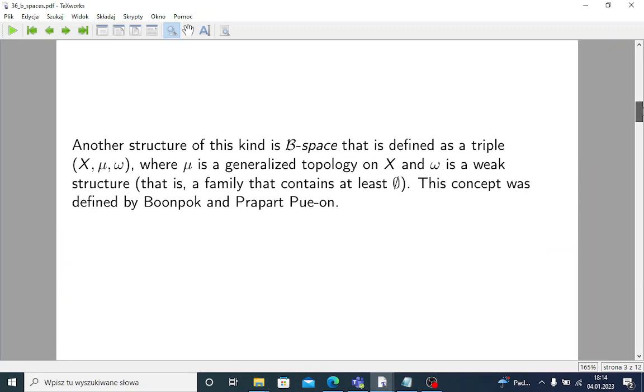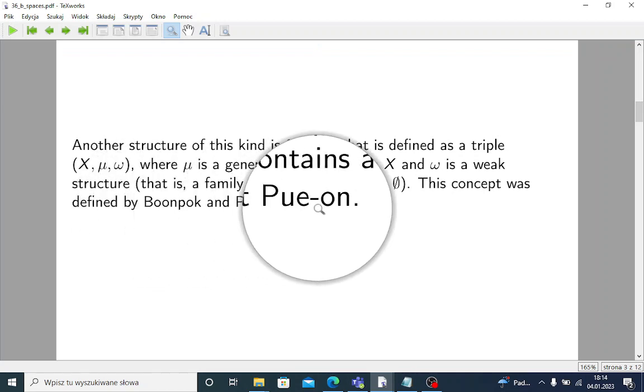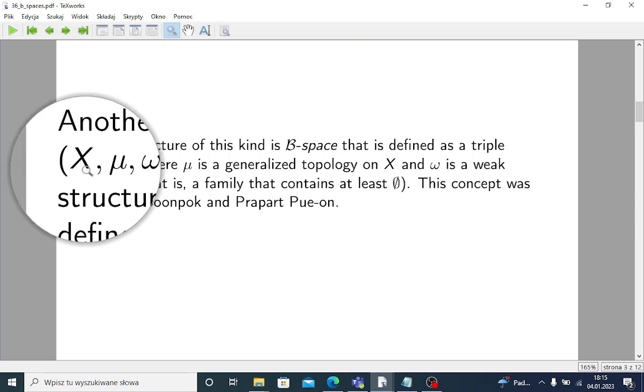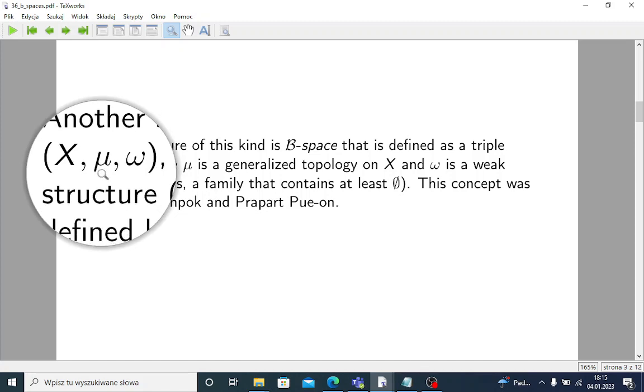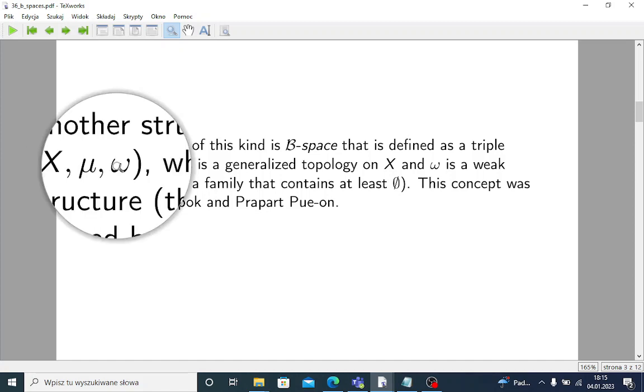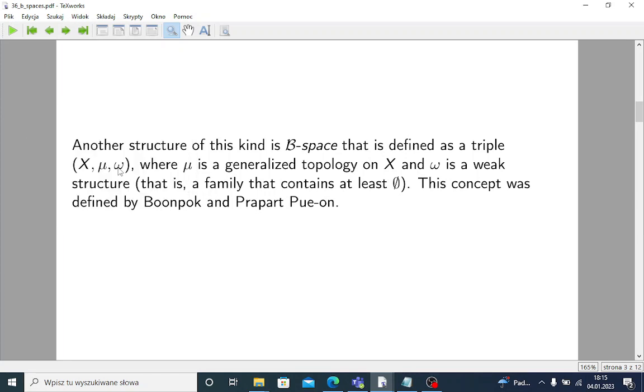But another structure of this kind, investigated and defined by Bunpok and Prapart Puang, and this is the matter of this video, is B space. Well, they just use this shortcut. B space that is defined as a triple, where we have non-empty universe and generalized topological space, and where we have Ω, that is a weak structure.